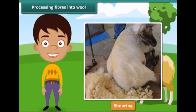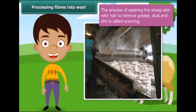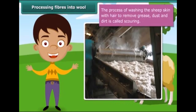The sheared skin with hair is then washed thoroughly in tanks to remove grease, dust, and dirt. This process is called scouring.